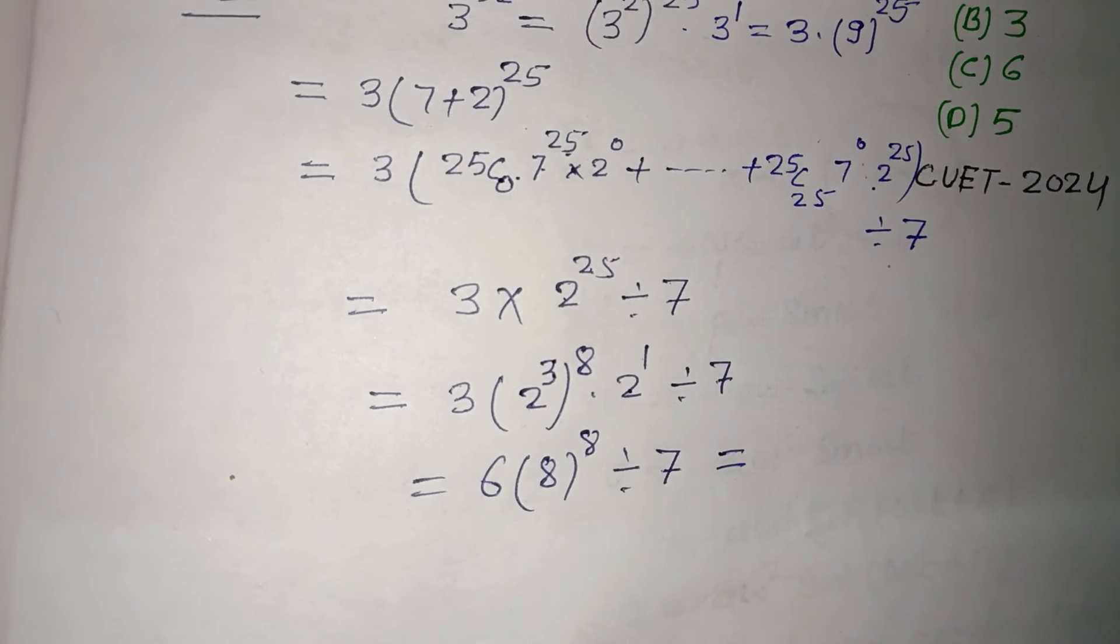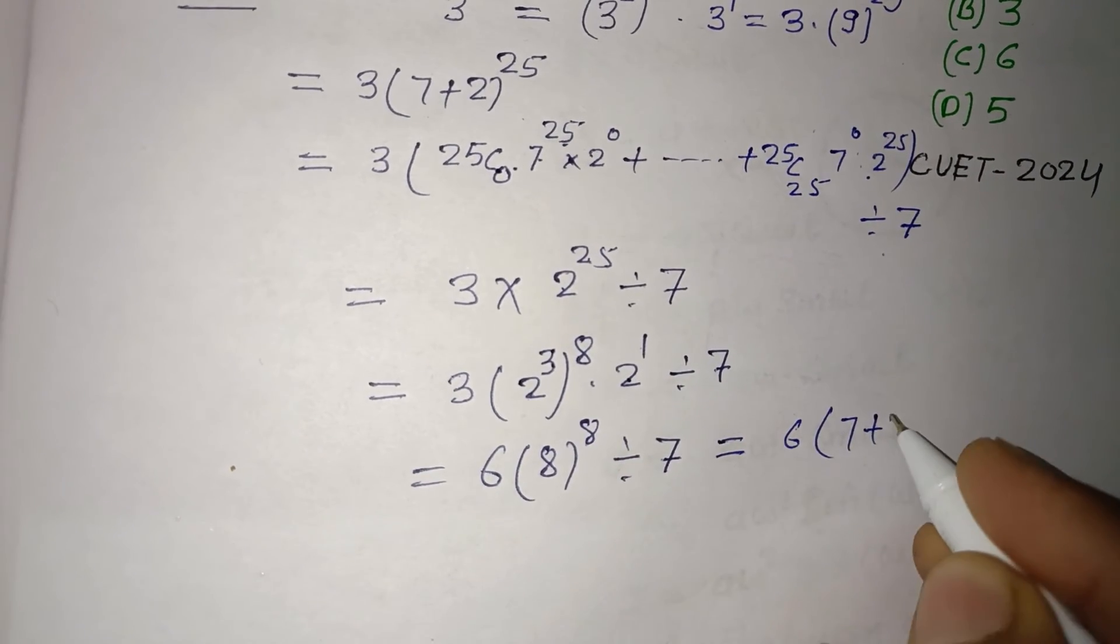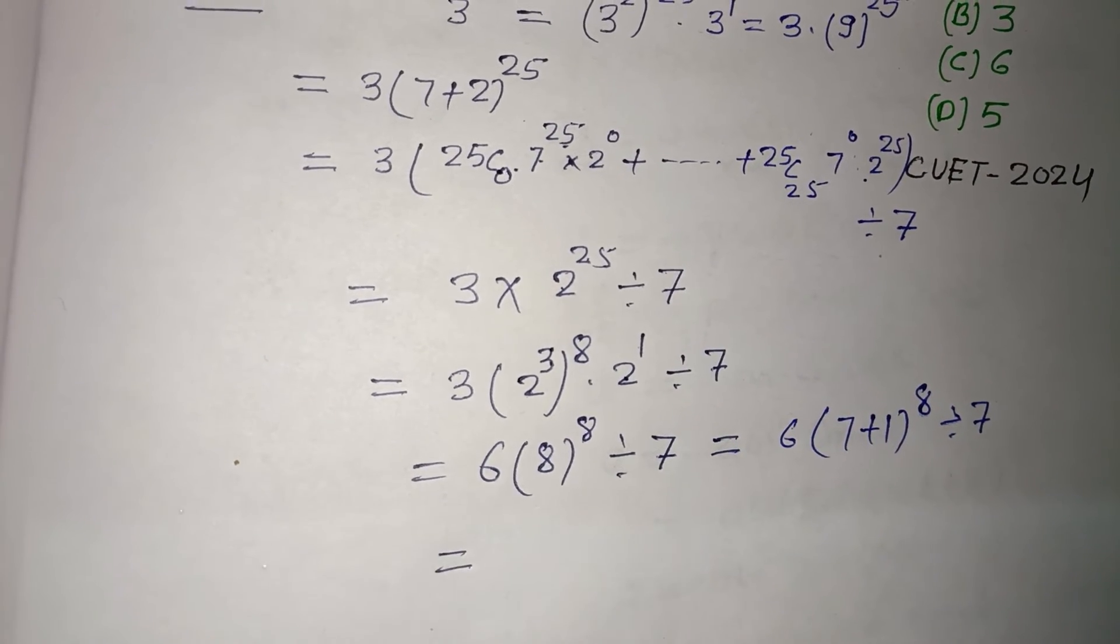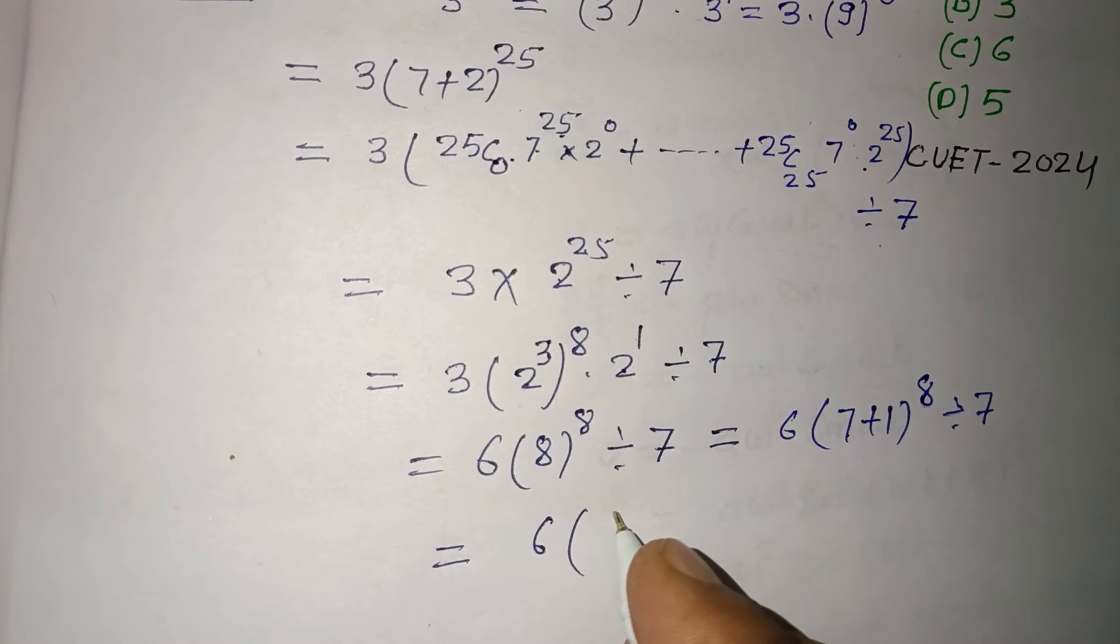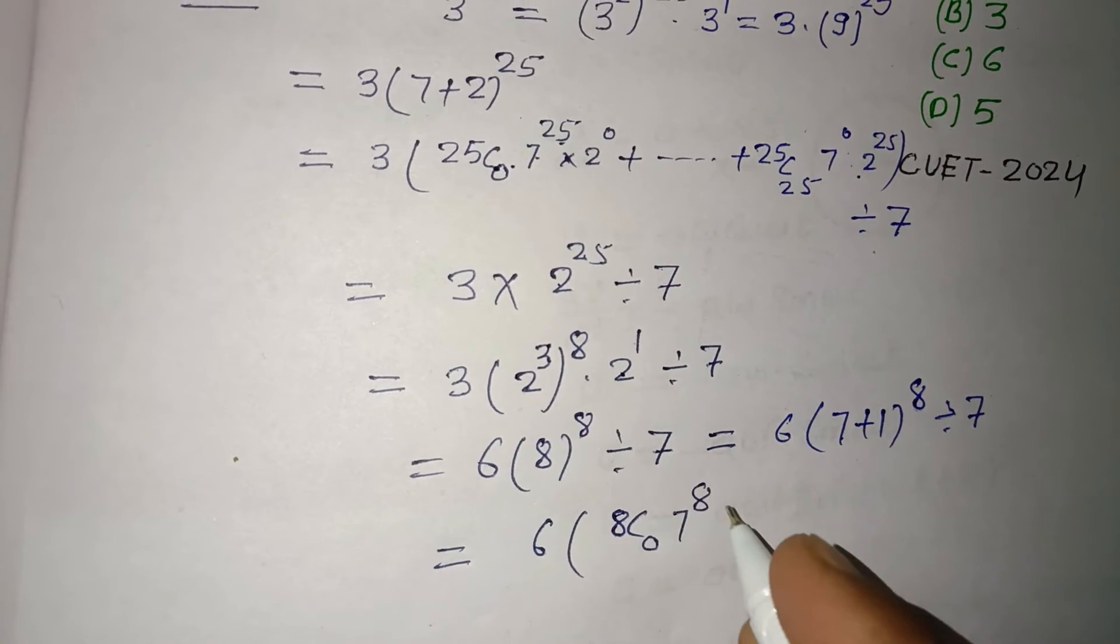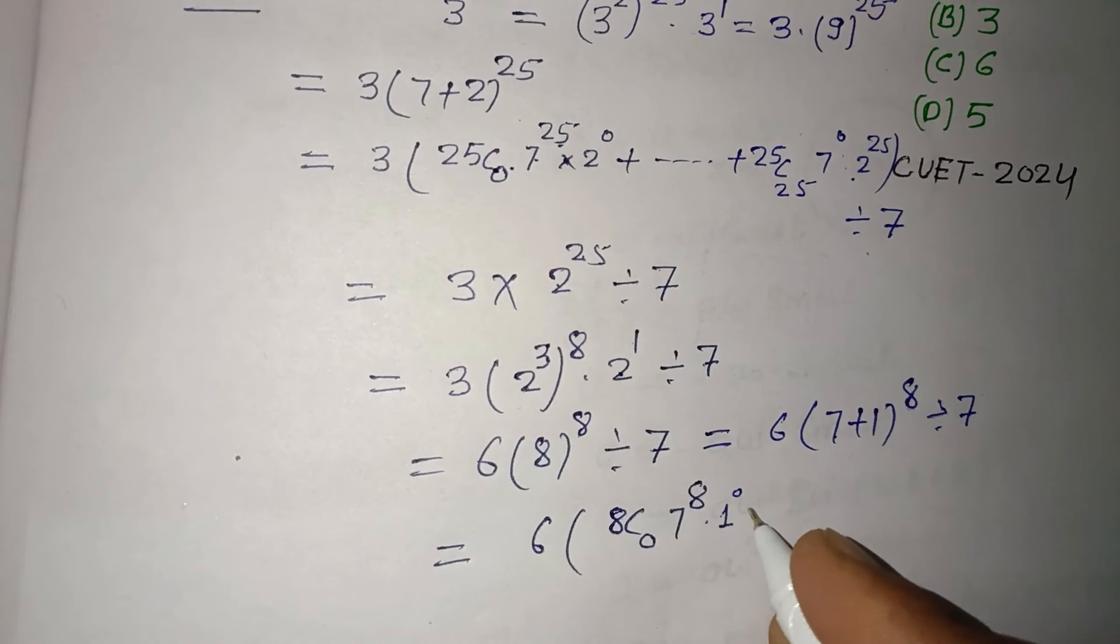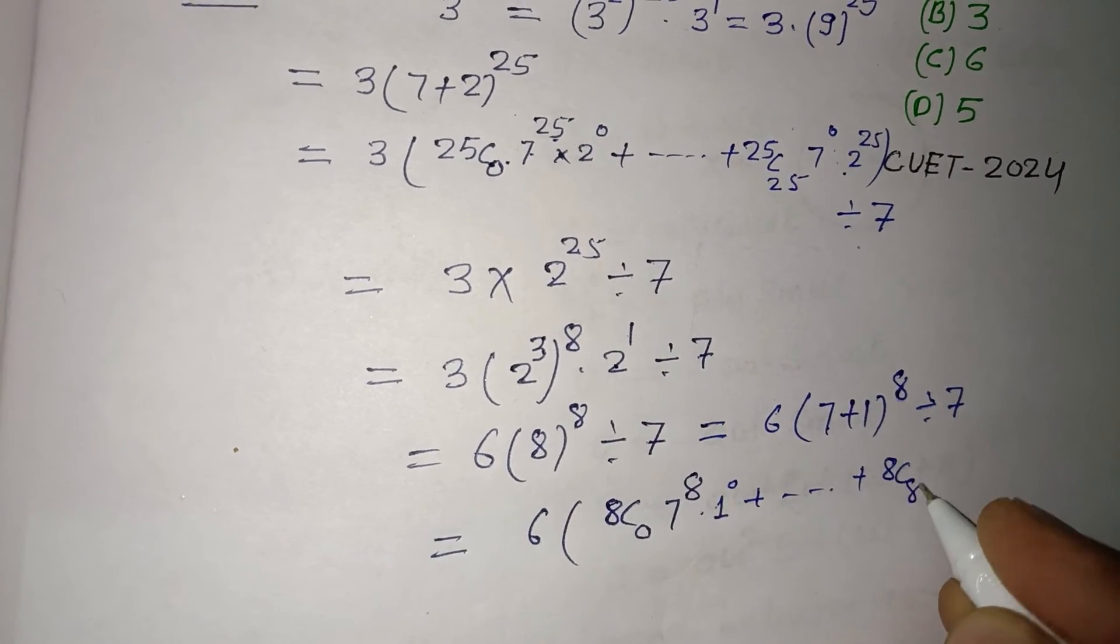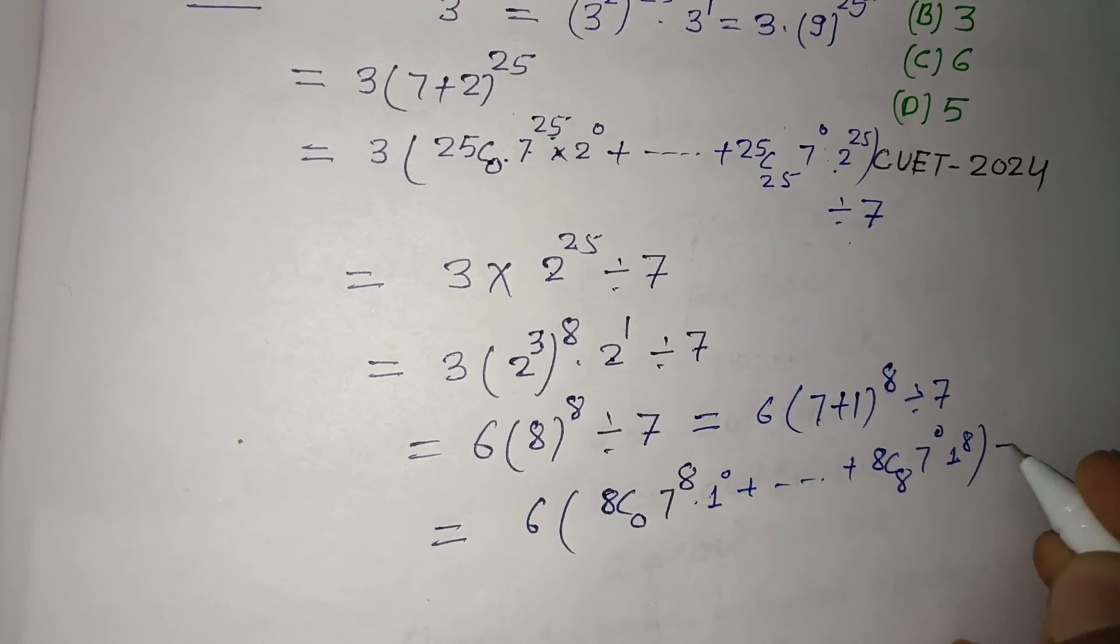We can write 8 as 7+1, so this becomes 6 times (7+1)^8 divided by 7. Again, we expand this using the binomial theorem: 8C0 times 7^8 times 1^0 plus and so on, up to 8C8 times 7^0 times 1^8, all divided by 7.